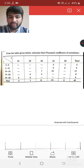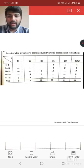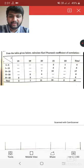Now you can see that in a tabular form, a question says that from the table given below, calculate Carl Pearson's Coefficient of Correlation. And X values are given on the horizontal basis, whereas Y is given on the vertical basis.